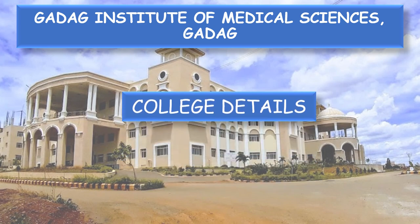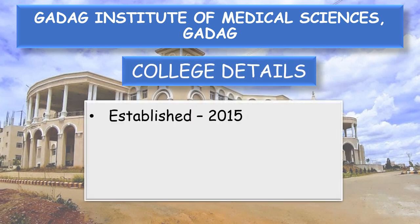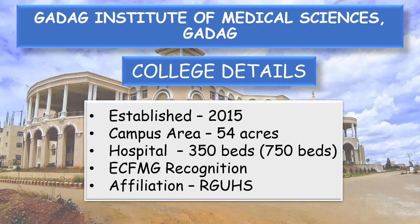Coming to the college details: this college was established in 2015. Campus area is 54 acres. The hospital has 350 beds, which will soon be 750 beds. It has ECFMG recognition and is affiliated to Rajiv Gandhi University of Health Sciences, Bangalore.